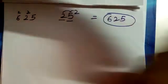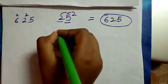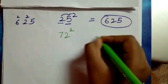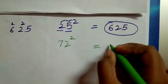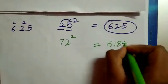Another example. 72 square equal to 5184.